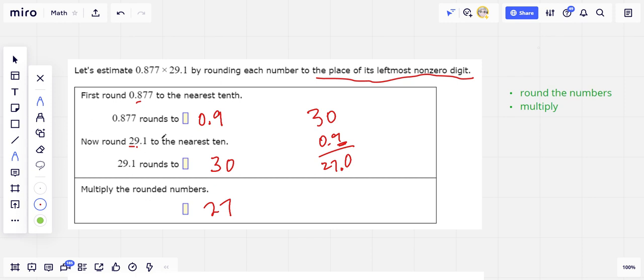And, you know, looking at this, 0.9 is almost 1, and 1 times 30 would be 30. This is almost 30, so that does make sense. Looks like we got it right.